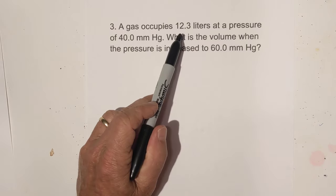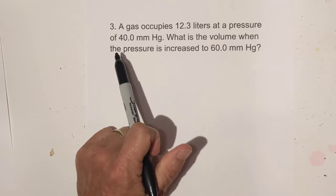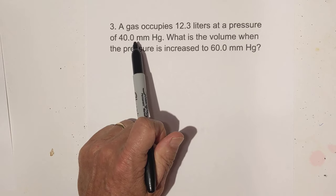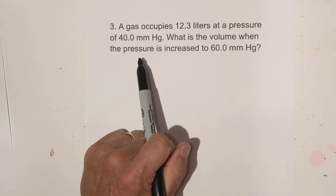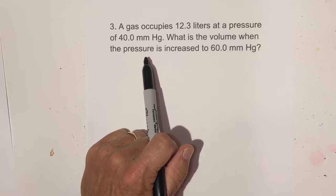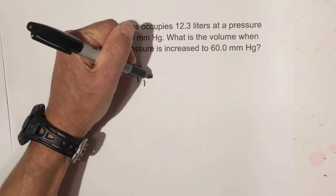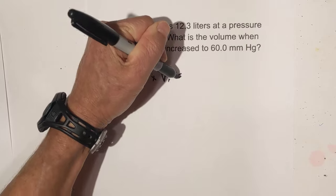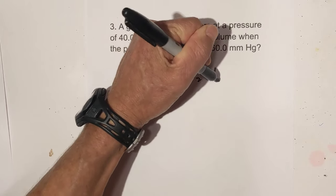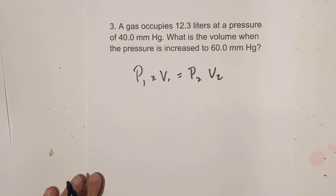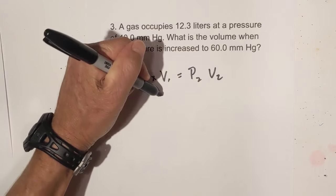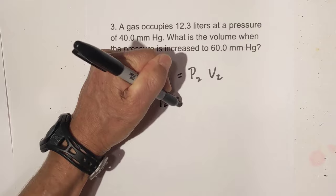A gas occupies 12.3 liters at a pressure of 40 millimeters of mercury. What is the volume when the pressure is increased to 60? So let's set this up. P1 times V1 equals P2 times V2. Remember this works also if you're looking for pressure. You just plug in what you have.